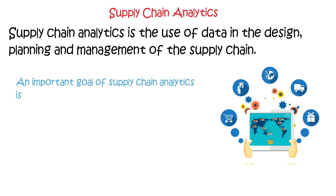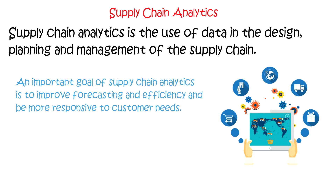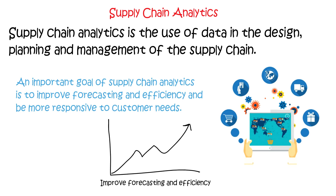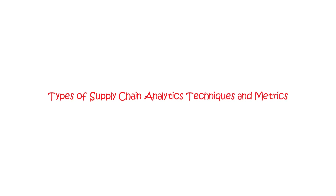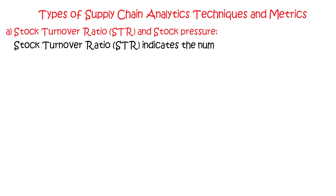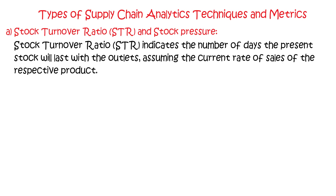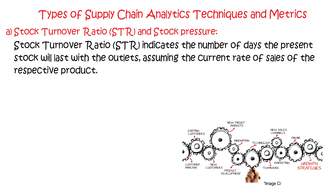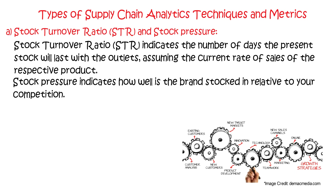An important goal of supply chain analytics is to improve forecasting and efficiency, and to be more responsive to customer needs. Moving on, the types of supply chain analytics techniques and metrics are as follows. Firstly, stock turnover ratio and stock pressure. Stock turnover ratio indicates the number of days the present stock will last with the outlets, assuming the current rate of sales of the respective product. Stock pressure indicates how well the brand is stocked relative to your competitors.